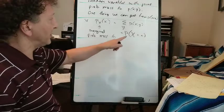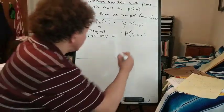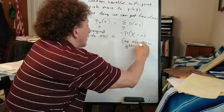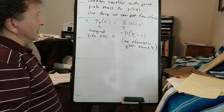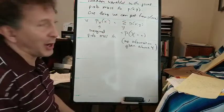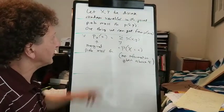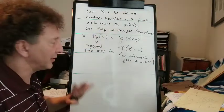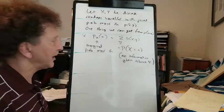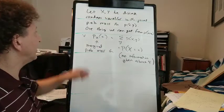This corresponds to wanting to predict the random variable capital X without having any information about what happened with y. In the joint probability mass function, we have an opinion about how x and y are related — maybe some values can't happen simultaneously, and others are likely. But if we don't know what happened with y and we're trying to predict x, the marginal is the function that tells us our opinion of having different values of x.